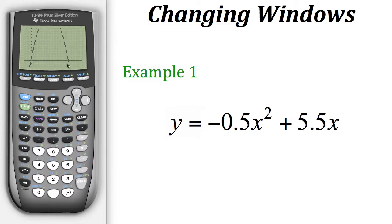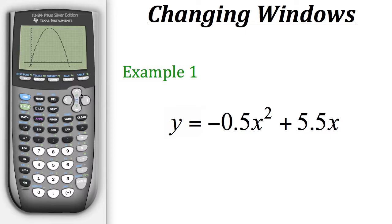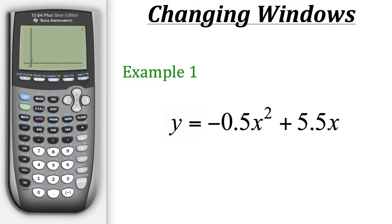Now we can see the right side of the parabola much better. All that's left is to see our vertex. The y max is currently 10, which isn't high enough. Let's go back to window and change y max — first try 15, but we're not quite there yet. Let's go further and set y max to 20. Now we can see the vertical and horizontal intercepts as well as the vertex, making this a good window for this graph.